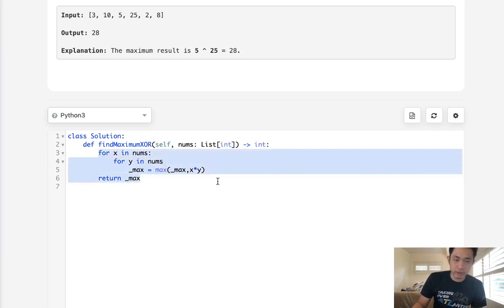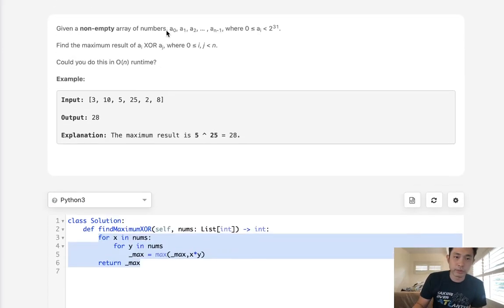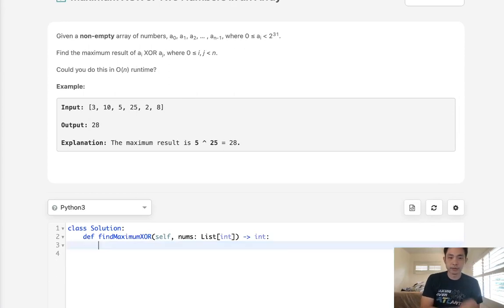But unfortunately this is going to reach a time limit exception because it's n-squared. We want to do this in O(n) runtime. So how could we do that?